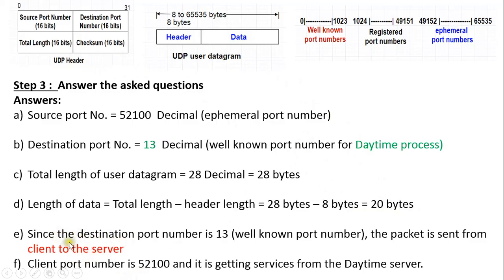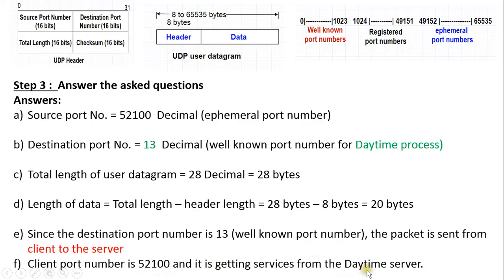The destination port number is 13, which is a well-known port number. The packet is sent from client to server because the client process is assigned an ephemeral port number, while the destination server process has the well-known port number. In the last question, we are asked what is the client process — the client process is a daytime process, as it is getting services from the daytime server. So the example is complete. Thank you.